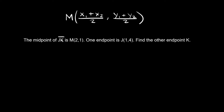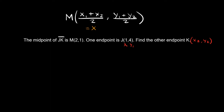Last problem. The midpoint of segment JK is at 2, comma 1. One of the endpoints, J, is at 1, comma 4. Find the other endpoint K. We know the midpoint coordinates are at 2, comma 1, and we have one endpoint J at 1, comma 4. We label J as x1, y1, and K is x2, y2 — that's what we're solving for. The x part of the midpoint formula equals the x coordinate of the midpoint, and the y part equals the y coordinate.